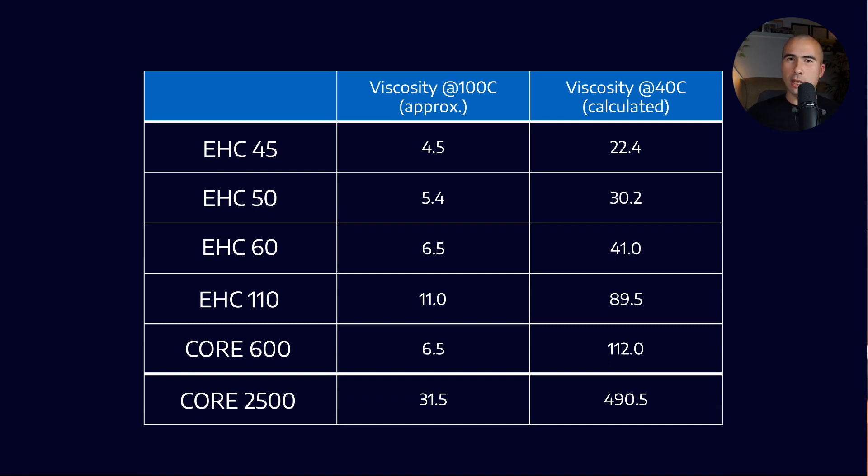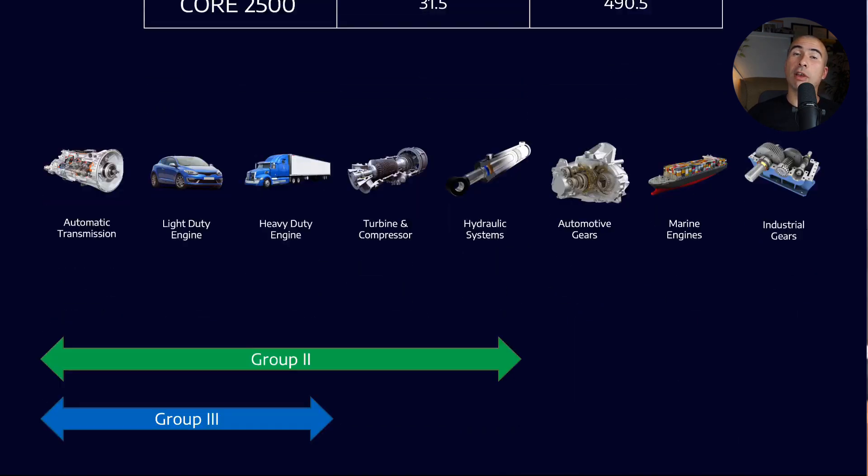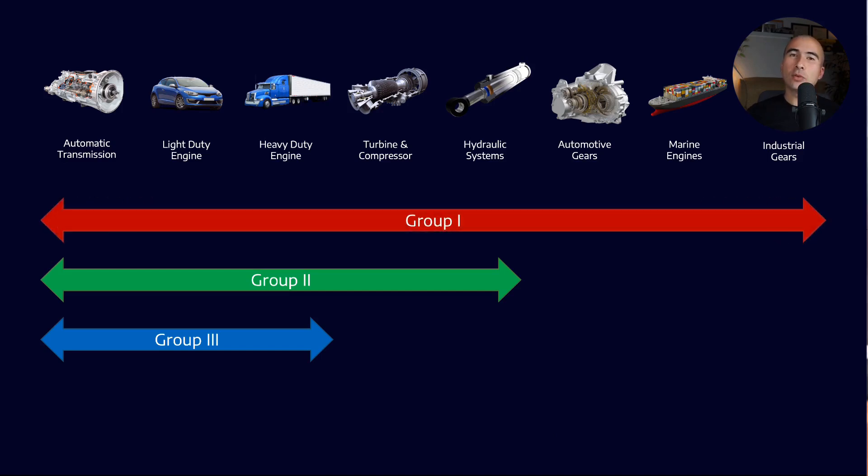So again, as we talked about, the principle is if you refine something more, it tends to get lower in viscosity. So group 1s being the least refined tend to be available in higher viscosities. And that's why the bright stocks are such an important component of the base stock market because it enables us to make higher viscosity fluids with relatively cheap mineral bases.